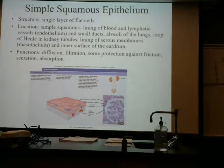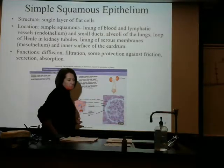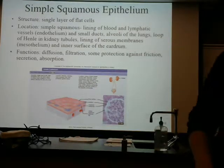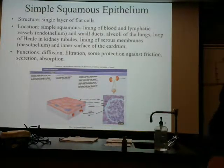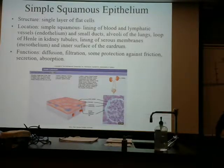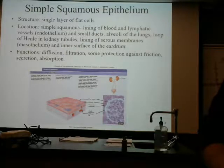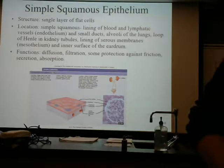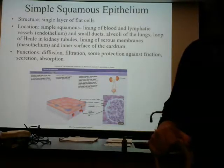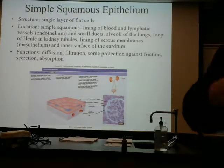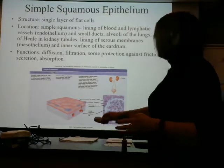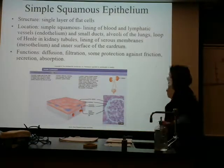Also the lining of serous membranes around the organs of the body, and the inner surface of the eardrum. It's important to keep things out of that opening — because openings to the outside need protection. Functions of these cells include diffusion, filtration, friction reduction, secretion, and absorption. There's a lot that these cells are very important in helping.